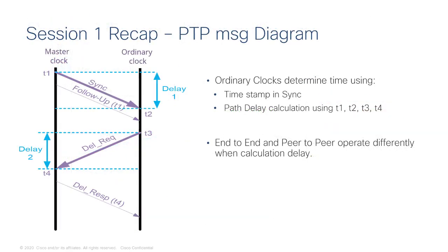Let's recap: it's all about T1, T2, T3, T4 — computing delay and making micro-adjustments. Profiles all work differently, so if you're having a problem with PTP in your network, one thing to always check is whether all the devices are running the same profile. If they're not, that's probably why it's not working. Thanks for sticking around all the way to the end — see you next time.